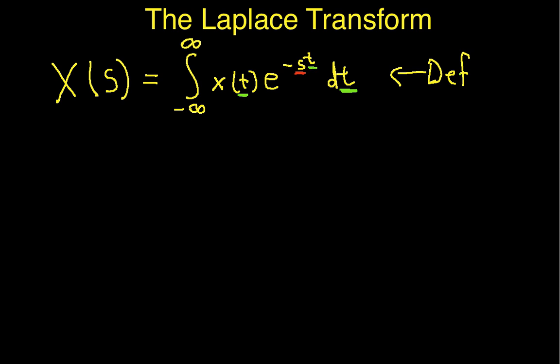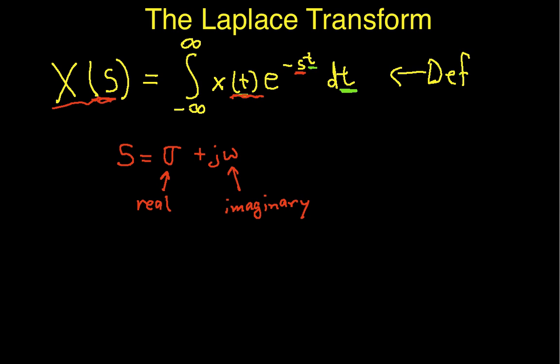Now, the first thing that may seem strange is that s is actually a complex number, which we usually write as σ plus jω, where σ is the real part of s and ω is the imaginary part. You may be thinking we're not doing ourselves any favors — we're taking a time function, which is a function of a real-valued variable, and turning it into a Laplace transform, which is a function of a complex-valued variable. This does introduce some interesting complications, but if you're comfortable with complex numbers, it's not bad.